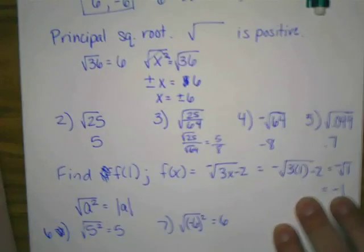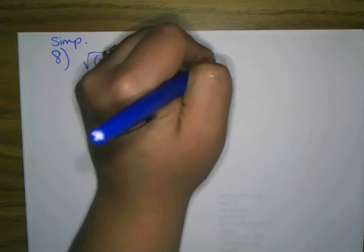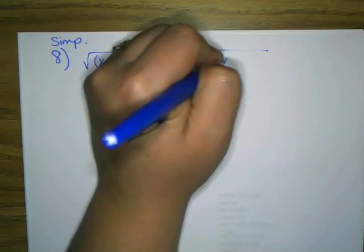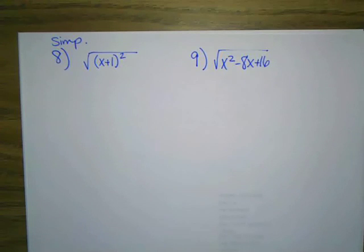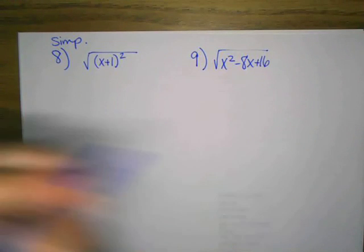Okay, so let's try some. And we are just simplifying here. So we have the square root of the quantity x plus 1 squared. And the square root of x squared minus 8x plus 16.